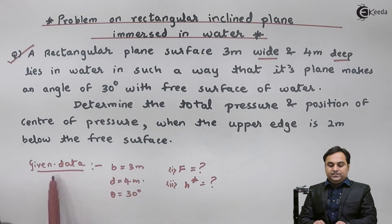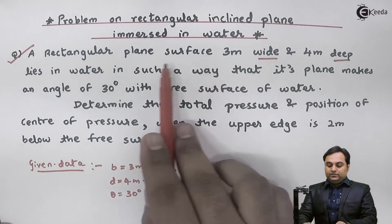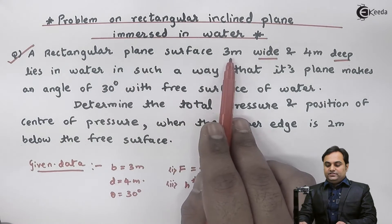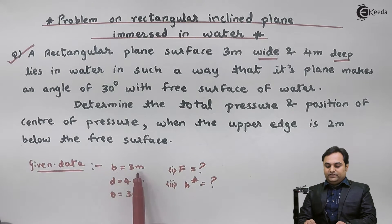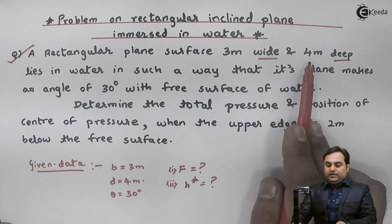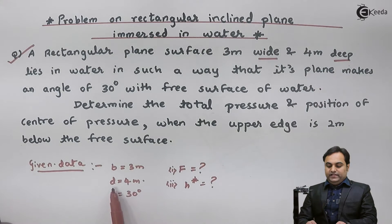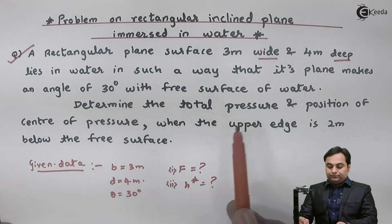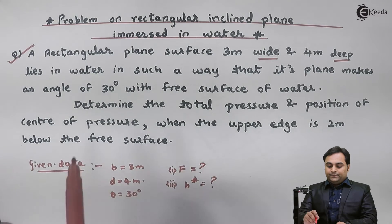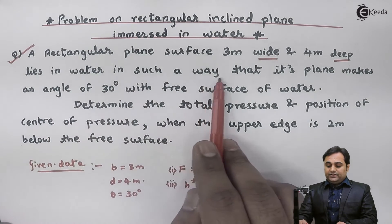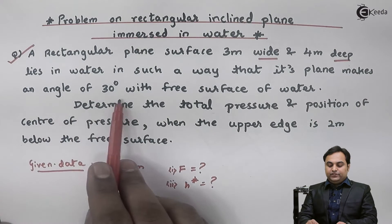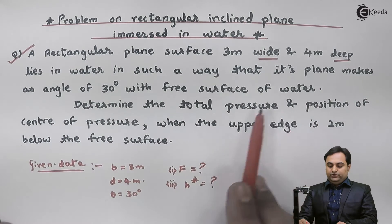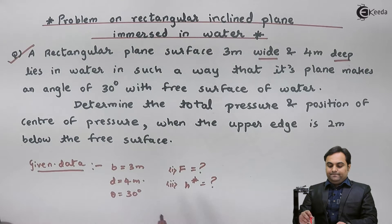From this question, the given data is: since the rectangular plane surface is 3 meter wide, b (width) = 3 meter, and 4 meter deep so d = 4 meter. It lies in water such that its plane makes an angle of 30 degrees with the free surface, so theta = 30 degrees.